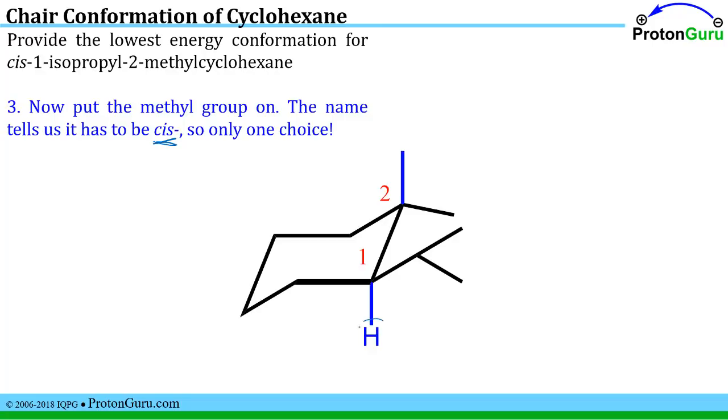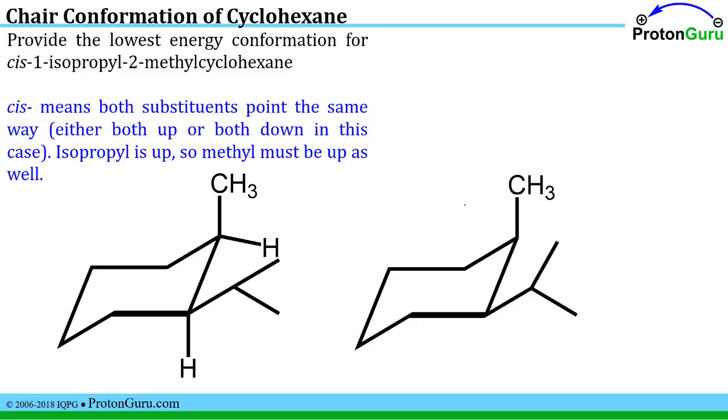Well the isopropyl group is up and this hydrogen is down. Cis tells you that both groups have to go the same direction. So on position two the methyl group also has to go up. So our final structure would have the methyl group up and the isopropyl group up. And usually people will draw out the structure without the hydrogens drawn.